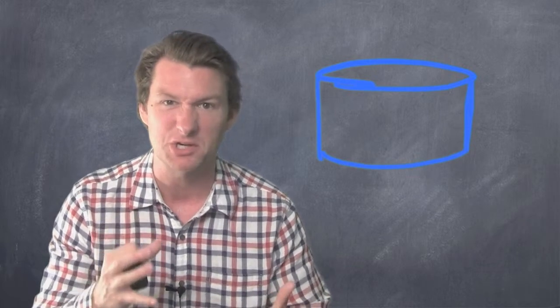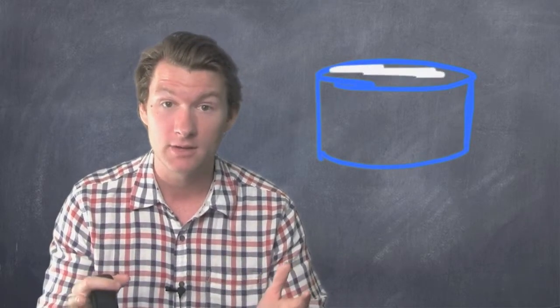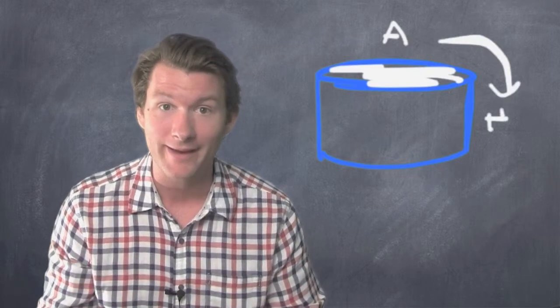What's a cylinder? A cylinder is like a circle that's been pulled into the third dimension. And all you've got to do is take the area of that circle and multiply it by the height.